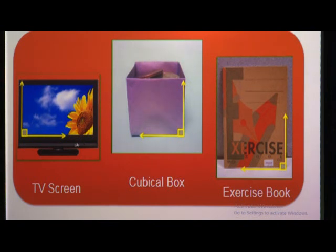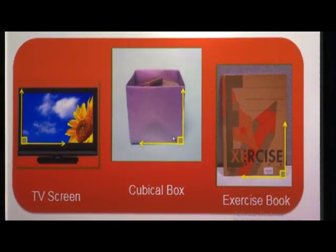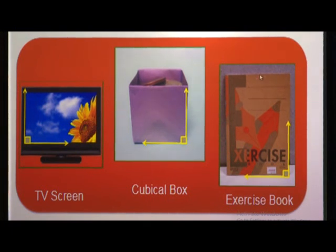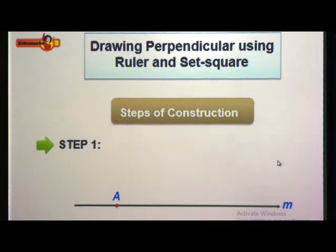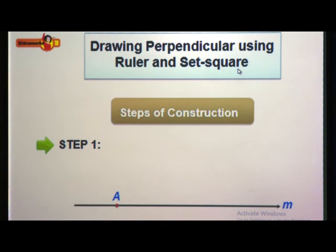This is a piece of paper. It has been folded once and again folded twice. You can see the angle formed between all four sides is a right angle — that means 90 degrees. Any two lines forming a right angle are said to be perpendicular to each other. We can see this perpendicular in a TV screen or a cubical box — they all have 90 degree angles and are perpendicular to each other. Now we are going to see how to draw perpendicular using ruler and set square. In the geometry box we have two set squares of different angles.